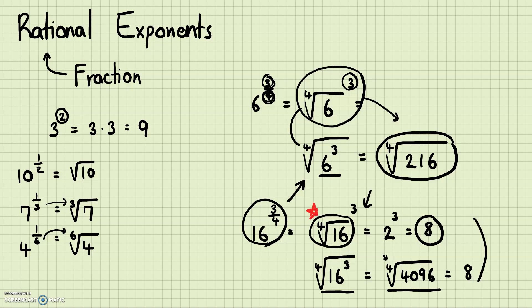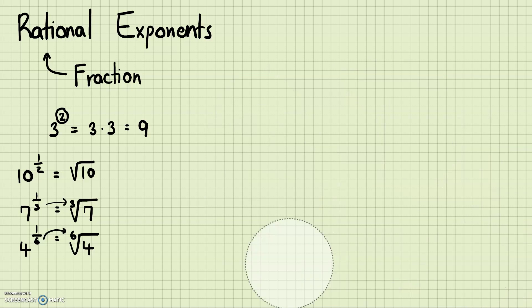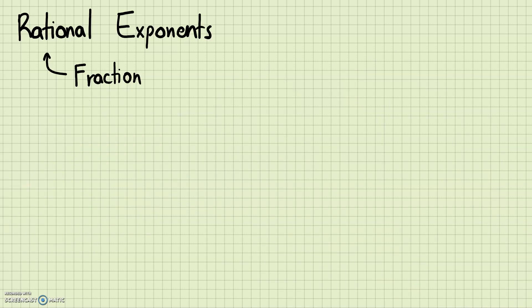So in that case doing the root first was more convenient, whereas for 6 to the 3/4 doing the exponent first was more convenient. You can play around and think: should I do the root first or the exponent first to simplify? When you have a rational exponent, the denominator becomes the root and the numerator becomes the exponent. Let me quickly write out a few examples to practice.